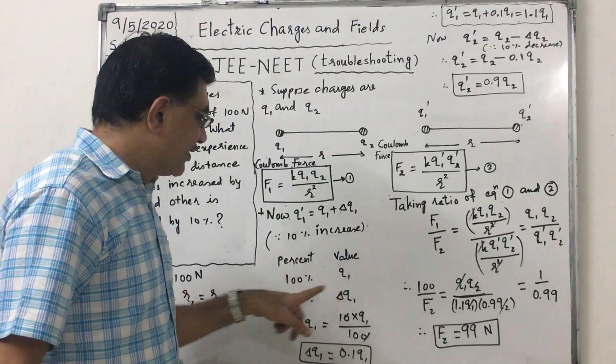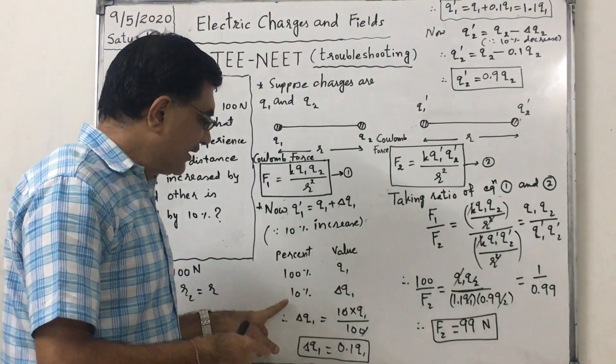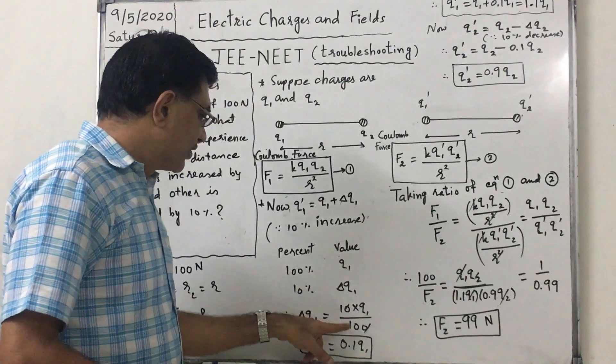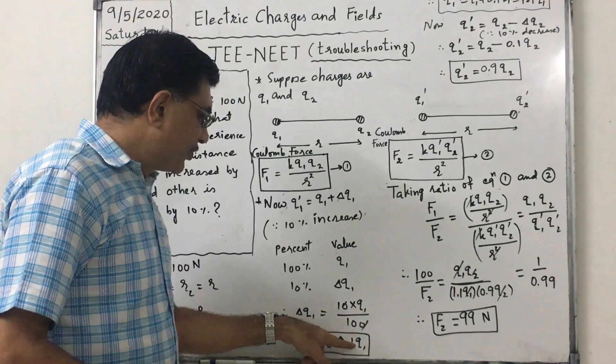Percent and value: initial value is always called 100%, so 100% equals Q1. Then 10% is delta Q1. So delta Q1 will be equal to 10 times Q1 upon 100. That cancels to 1 by 10, which is 0.1 Q1.